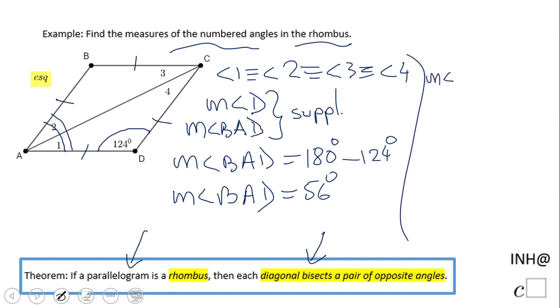the measure of angle 1 or 2. I need to divide this 56 by 2. Why? Because diagonal AC bisects the angle BAC. So I'm gonna divide by 2 and I get 28 degrees.